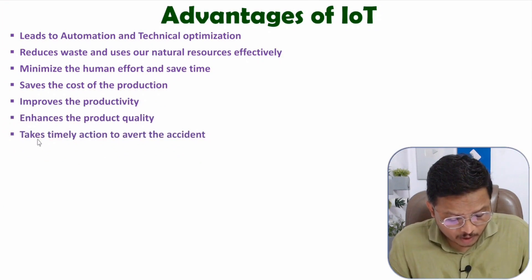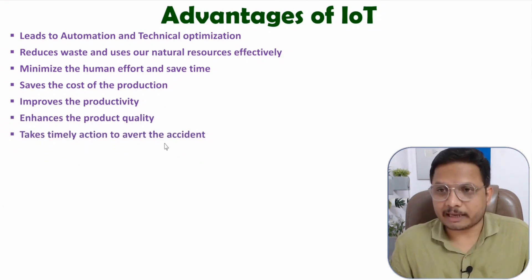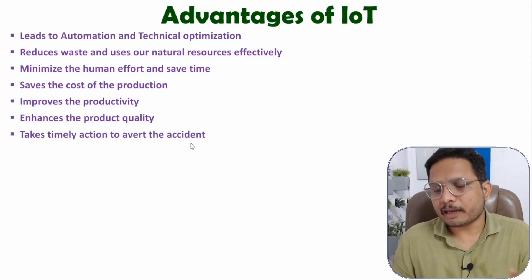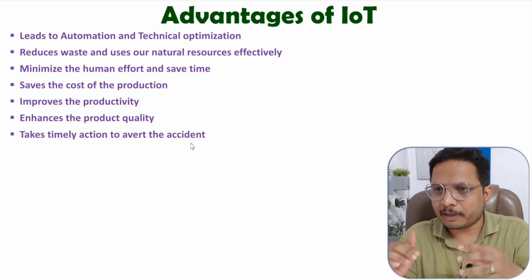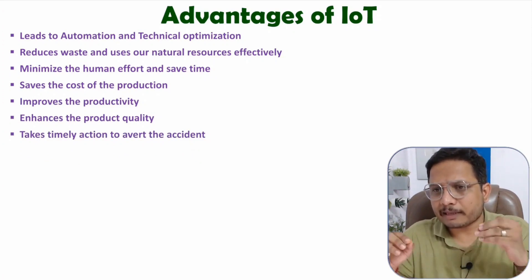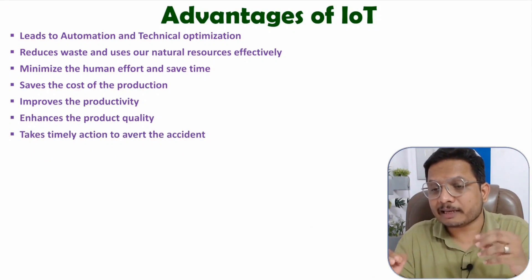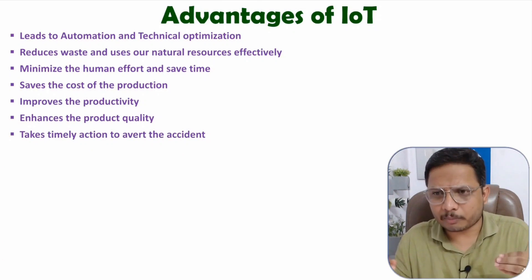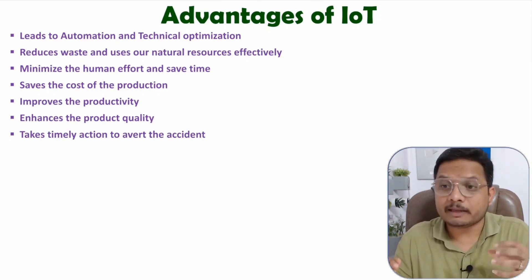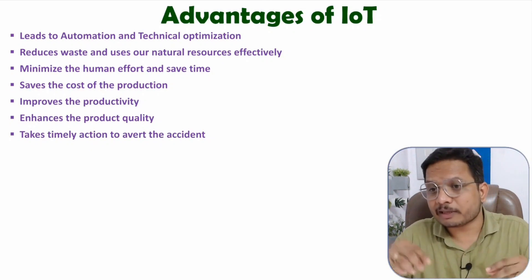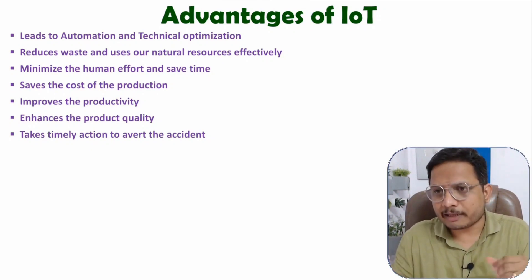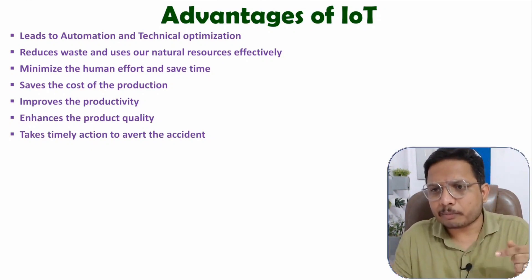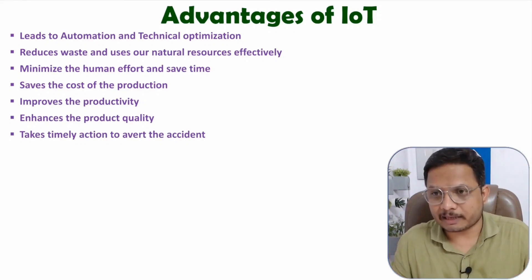We can take action on time and potentially avoid some accidents. If actions are taken manually, there is a possibility that the action may not happen on time, which could lead to an accident. So, in real-time and critical applications, automation is essential and important. If that automation is done using IoT, then various combinations can be provided to prevent accidents.